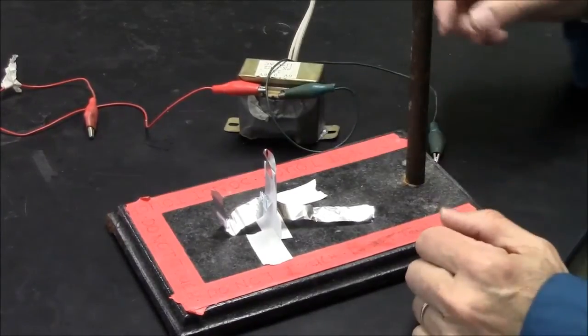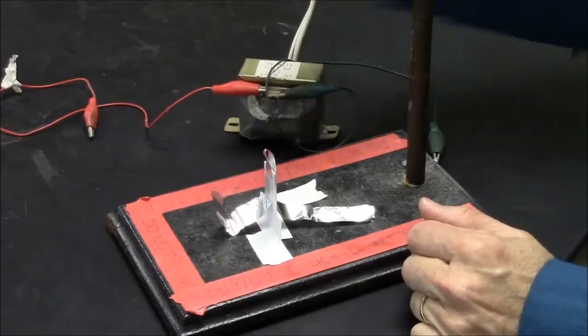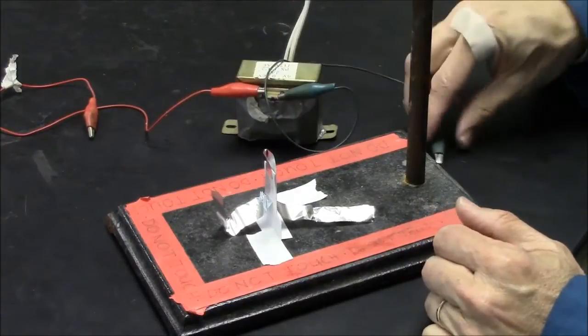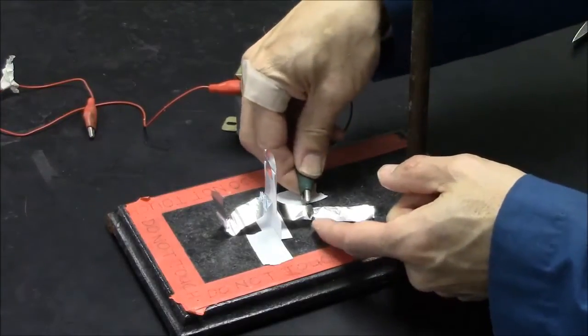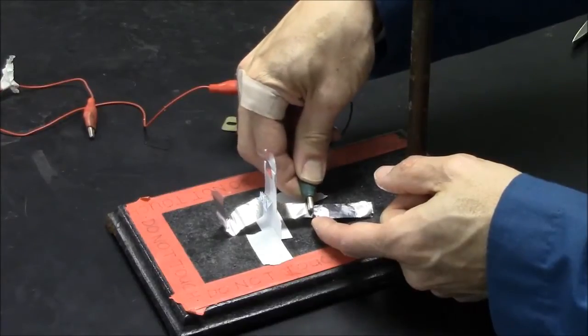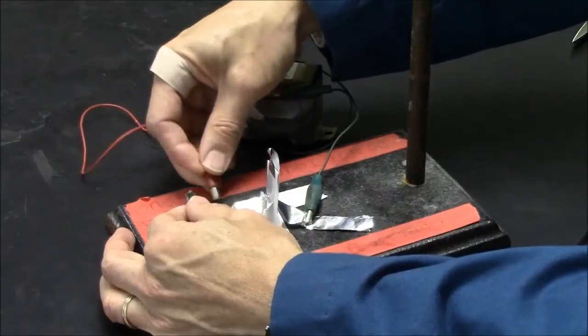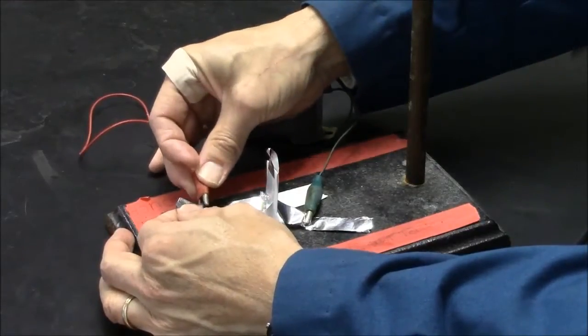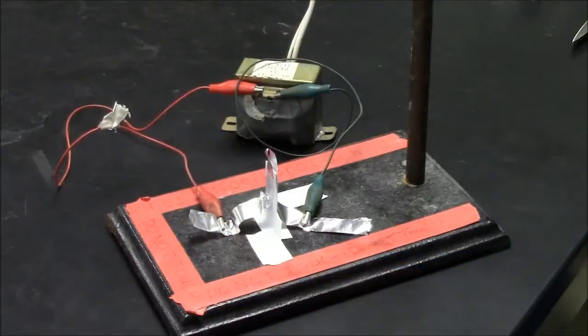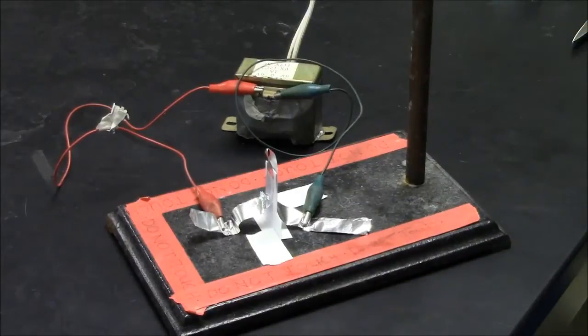To make the igniter spark, I need to pass electricity through the foil. This is a 12 volt transformer. I'll make connections on each side of the igniter. So there are electrical connections.